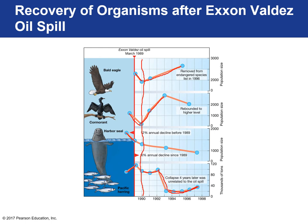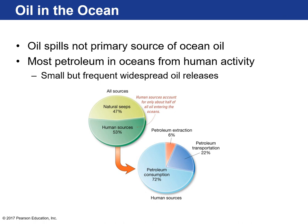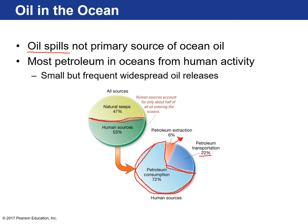After one year, populations actually rebounded fairly quickly — bald eagles increased drastically, and so did pacific herring. The collapse of pacific herring in 1993 was associated with disease, so it was unrelated to the oil spill. Oil spills, though dramatic one-time events, are not the primary source of all the oil in oceans. When you look at human sources, which make up more than half of all ocean oil, it's mostly petroleum consumption — us driving cars, boats, cruise ships. Extraction and well blowouts account for only about six percent; transportation tanker spills about 22 percent.